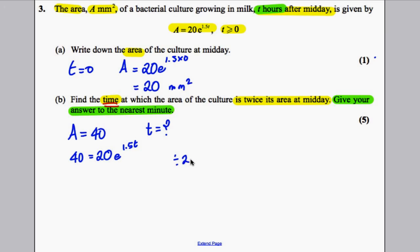Divide both sides by 20, and we would get 2 is equal to e to the 1.5t. You take logarithms of both sides, so you would get ln 2 is equal to 1.5t, and then you would divide both sides by 1.5, and you would get t is equal to ln 2 divided by 1.5.